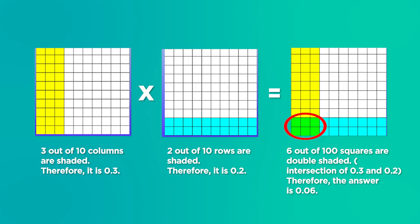We will represent each factor using the pictorial models of a 10 by 10 grid. 0.3 will be shown in the grid as 3 out of 10 columns shaded, multiplied by 0.2 shown as 2 out of 10 rows shaded. When the horizontal and vertical lines are placed over each other, 6 out of 100 squares are double-shaded — the intersection of 0.3 and 0.2. The double-shaded part represents the answer.